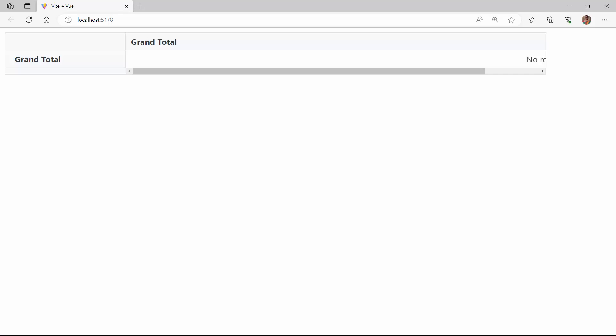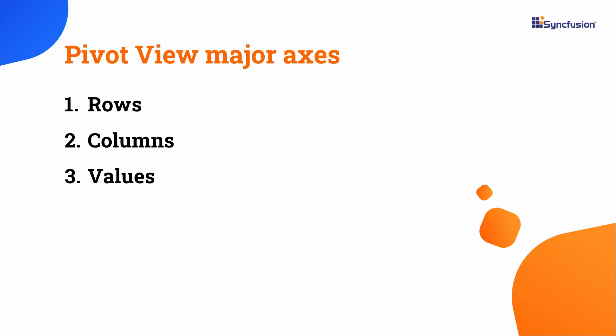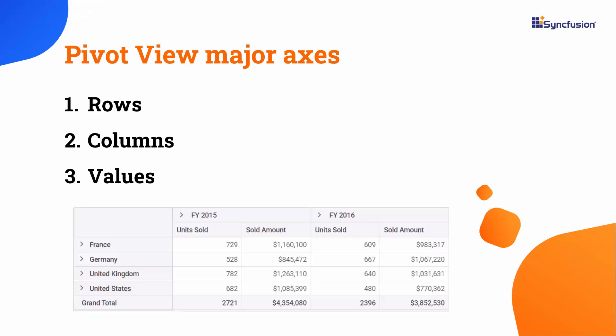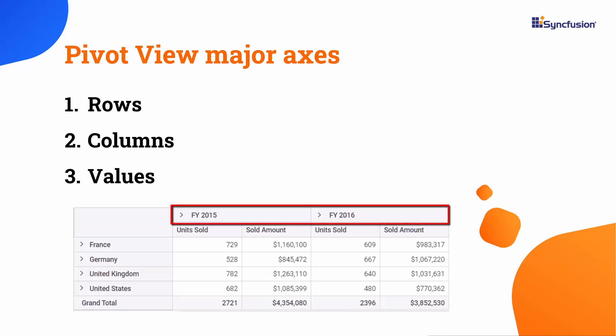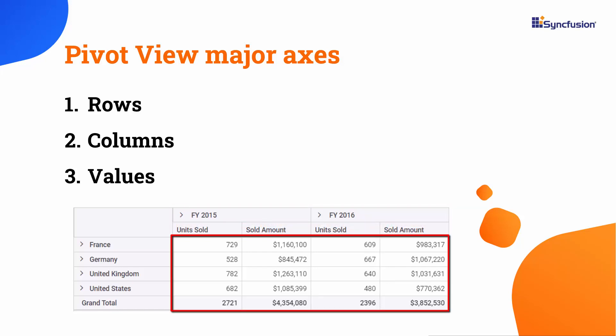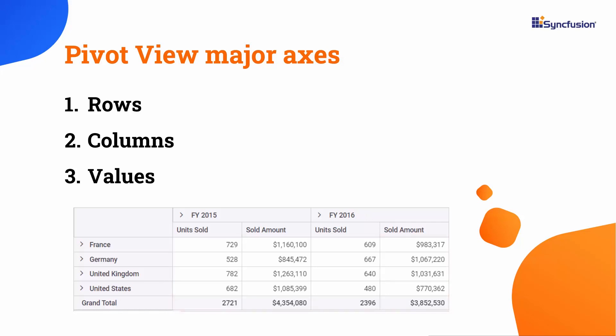The pivot table is rendered with no data. This is because the rows, columns, and their aggregation values are not defined. To display the pivot table with the defined data source, I need to add three major axes: pivot view rows, pivot view columns, and pivot view values. Pivot view rows are fields displayed on the row axis, columns on the column axis, and values are fields with aggregated numeric values.